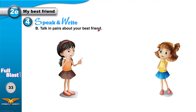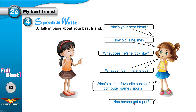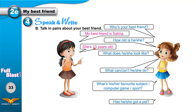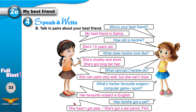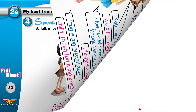Now talk in pairs about your best friend. One of you asks questions and the other answers. Who is your best friend? Selma. How old is she? She is 13. What does she look like? She's chubby and she's got long fair hair. What can or can't she do? She can paint very well, but she can't draw. What's her favorite subject? English. Has she got a pet? She's got a pet parrot — Flint is the name of the parrot.